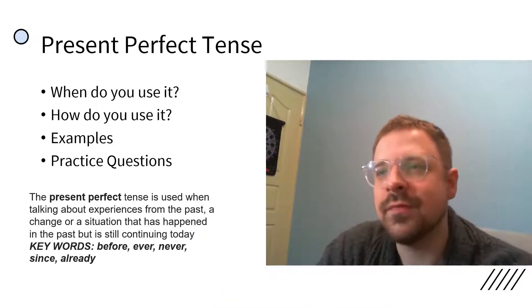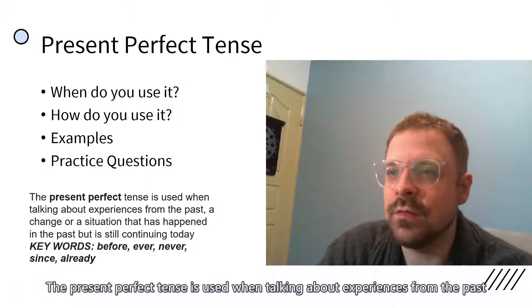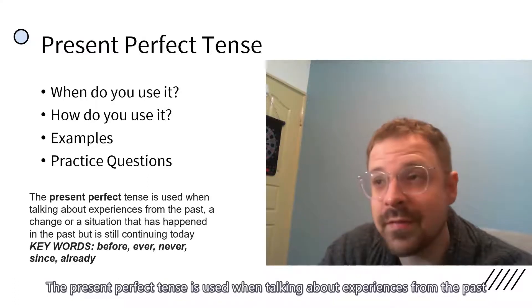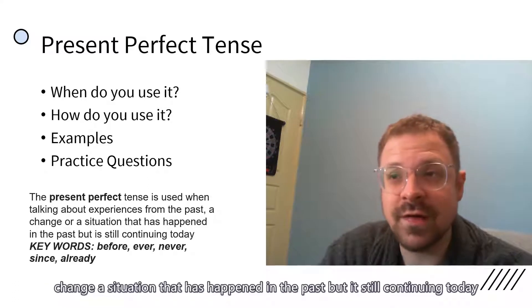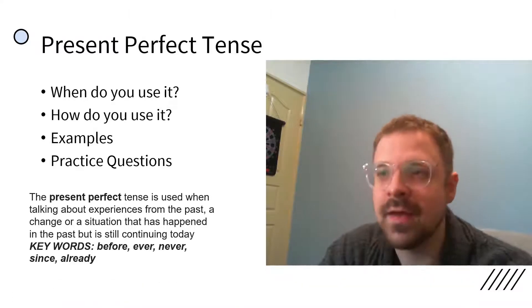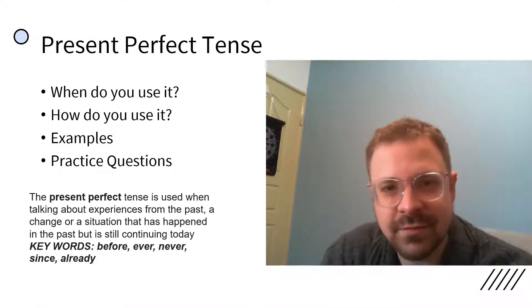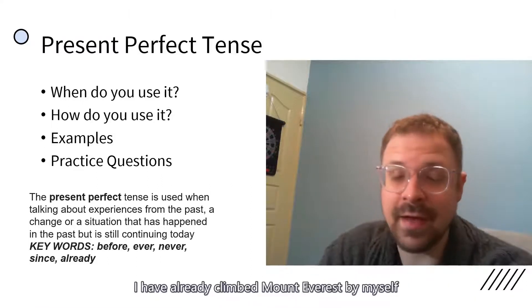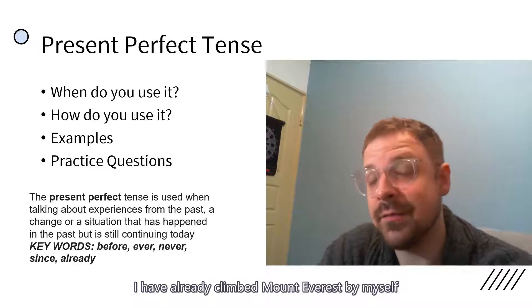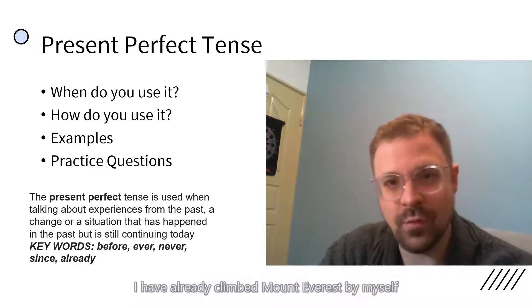When do you use it? The present perfect tense is used when talking about experiences from the past, a change or a situation that has happened in the past but is still continuing today. It's also used to talk about things that you're proud of, things that you have achieved. For example, I have already climbed Mount Everest by myself. Wow, that's amazing.